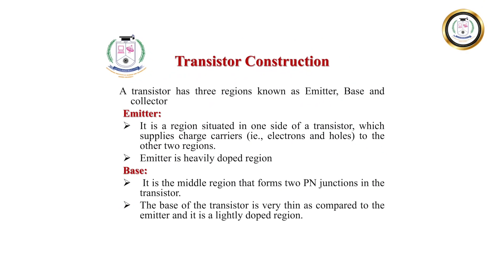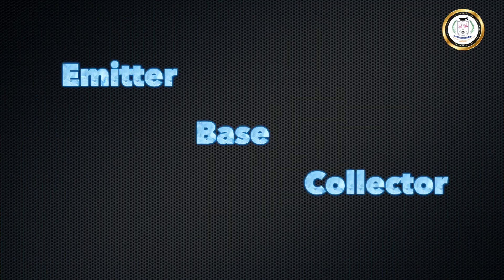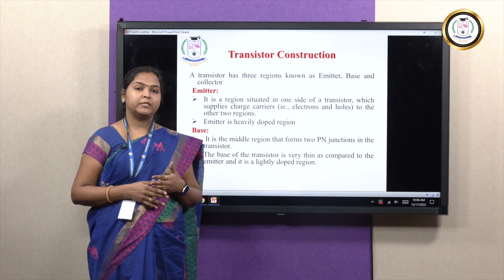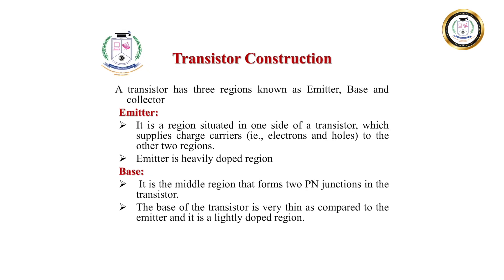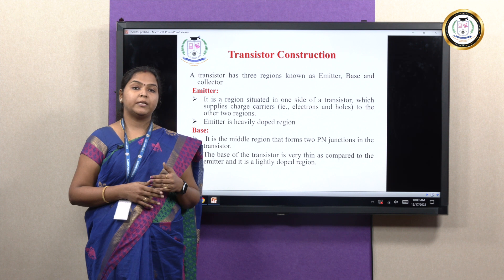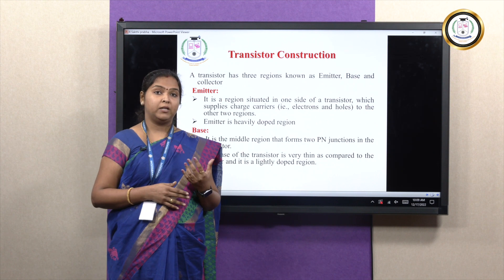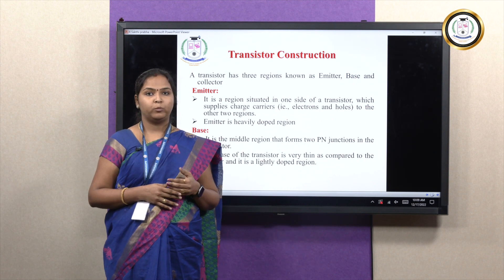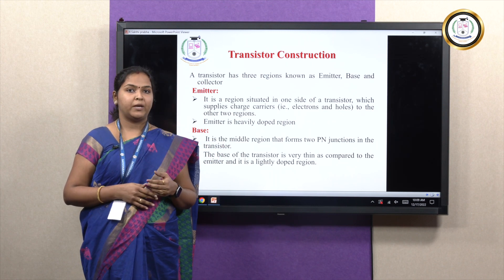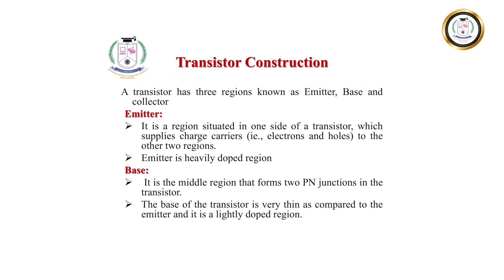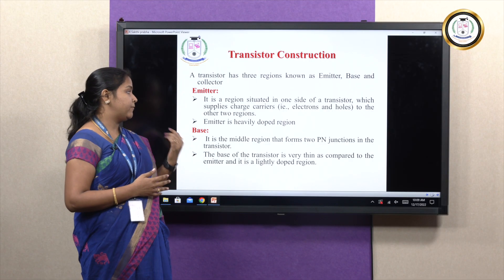In transistor construction, the transistor has been comprised of three regions: emitter, base, and collector. The emitter, as the name indicates, keeps on emitting the charge carriers — both electrons as well as holes. Hence it is also said to be the source terminal. When you look into the doping level of the emitter region, it is said to be heavily doped. Doping is a process of adding impurity to the pure semiconductor. When you increase the level of doping, the electrical conductivity keeps on increasing. So the emitter is a heavily doped region.